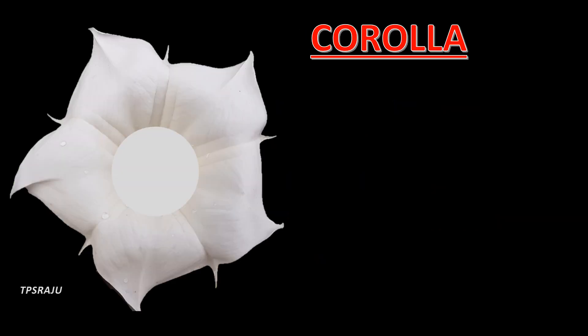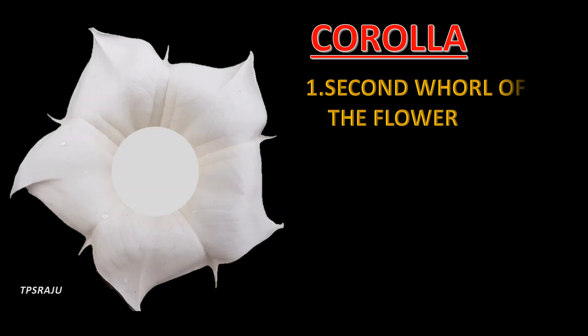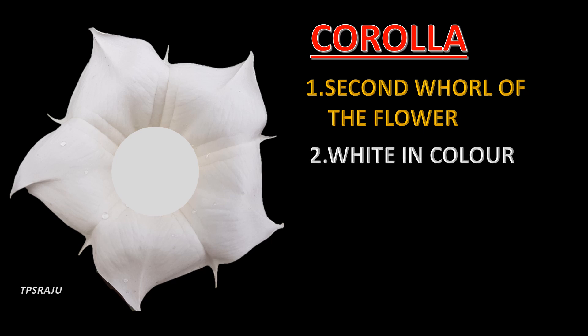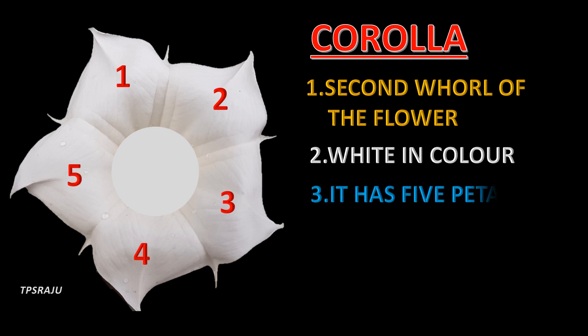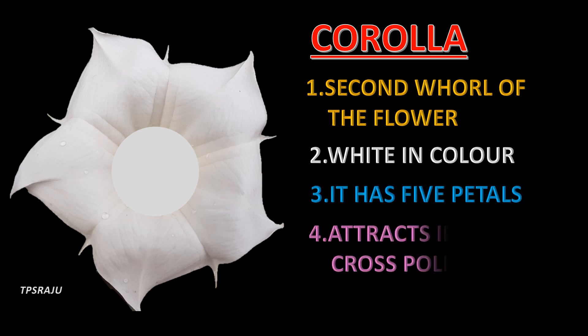This is the corolla, the second whorl of the flower. It is white in color and has five petals. The petals attract insects for cross-pollination.